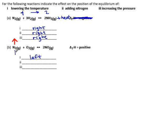If we add nitrogen, now we have too much. The system will consume nitrogen and oxygen, and make nitrogen monoxide. So, left side down, right side up, we'd say the reaction goes to the right.